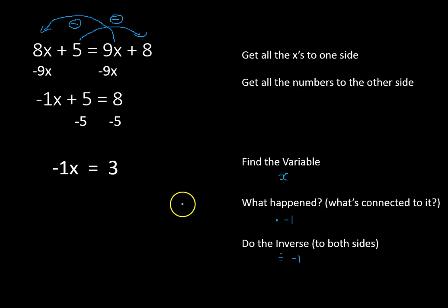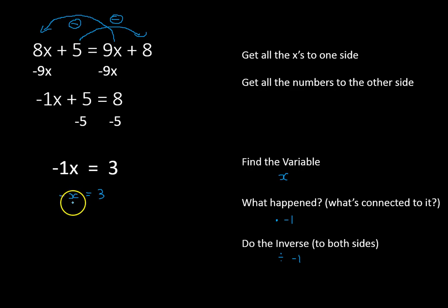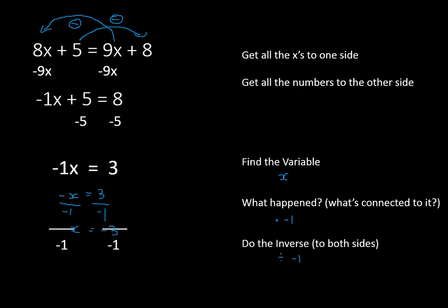When you actually do equations like this, they will be written as negative x is equal to 3, not negative 1x — the 1 is implied because 1 times x is just x. So be aware of that. When we divide both sides by negative 1, that essentially just changes the sign to its opposite. We're left with x is equal to negative 3, because a positive divided by a negative gives a negative result. Our final answer is negative 3.